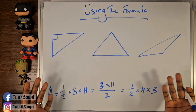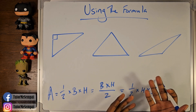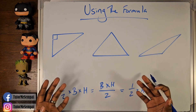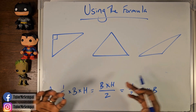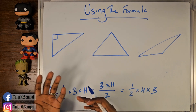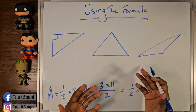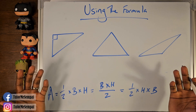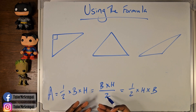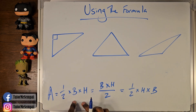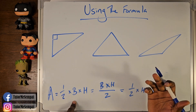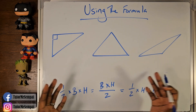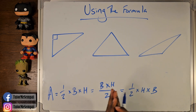Now, what is base and what is height? For our area of squares and rectangles, we used length, width, and side. Now we have something called base and height. What is a base and what is a height for our triangle? Well, that's going to depend on the type of triangle you have.